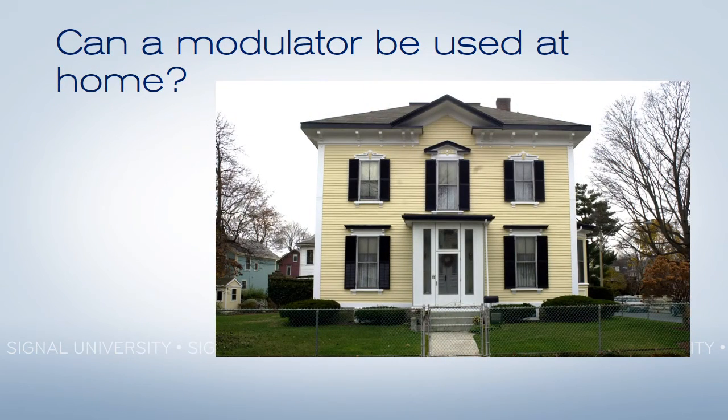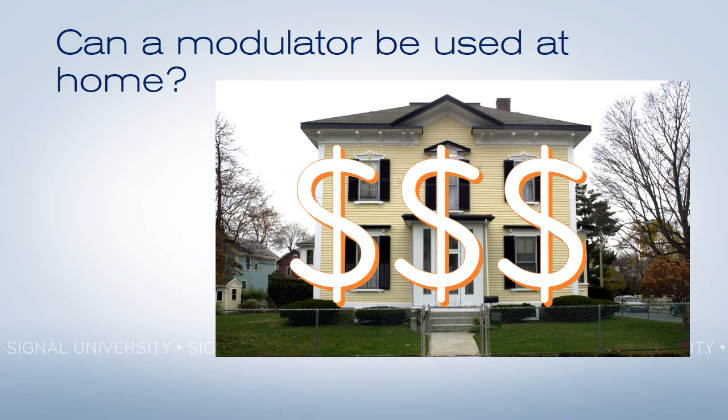Now, in the past, some people used modulator systems in their homes. With standard definition, this wasn't very expensive. But with high definition, it is quite expensive. Why? Because content providers like ESPN and HBO require that if you're going to use a modulator, you pay them special fees and use special encryption as well. As a result, the use of modulators at home has practically disappeared.